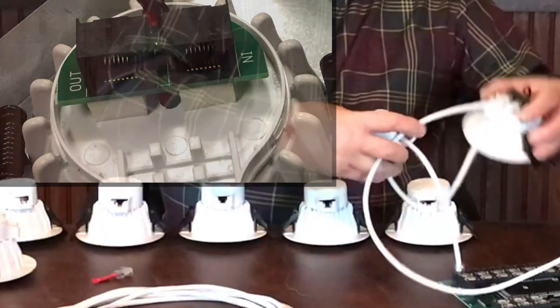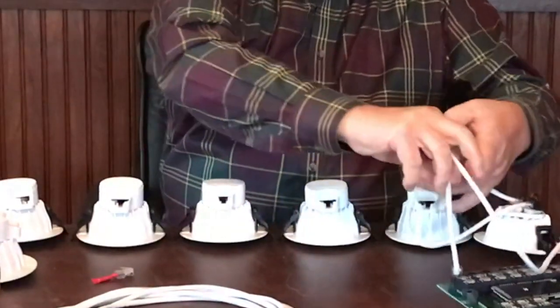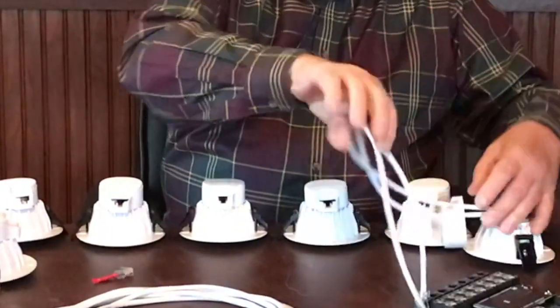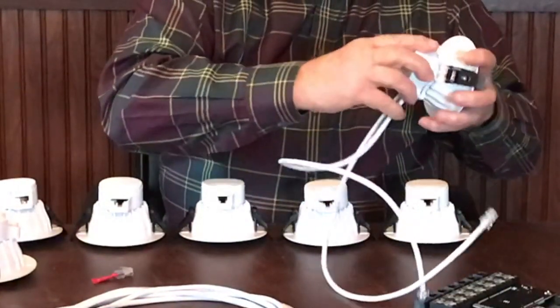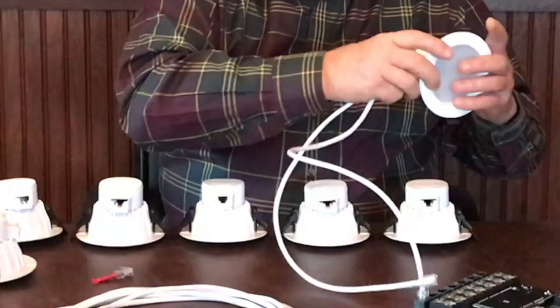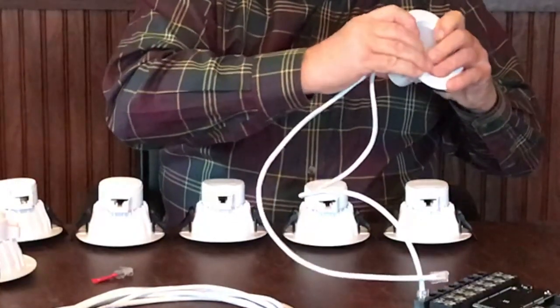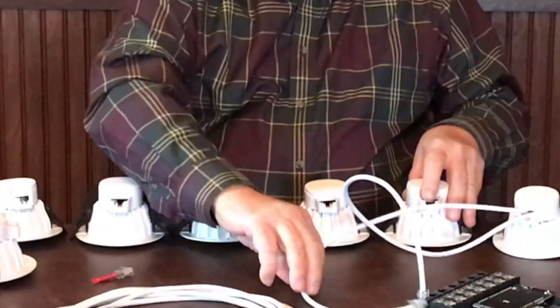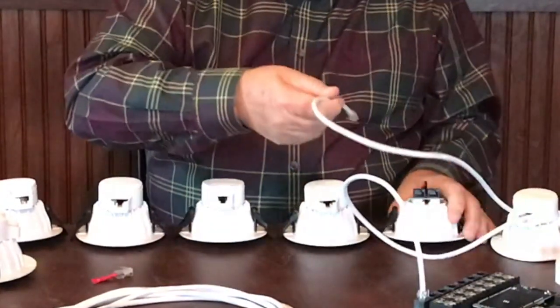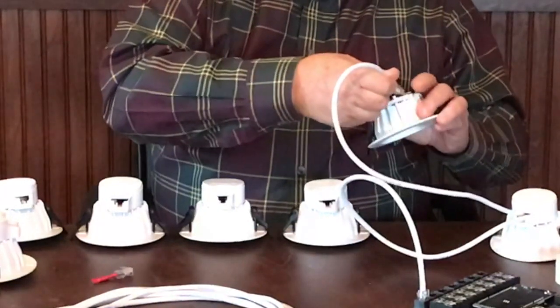We take our dust cover for the fixture, put it over the wires, and then we pop that dust cover back in place. We go to the next fixture in line and we run our jumper cable to it.